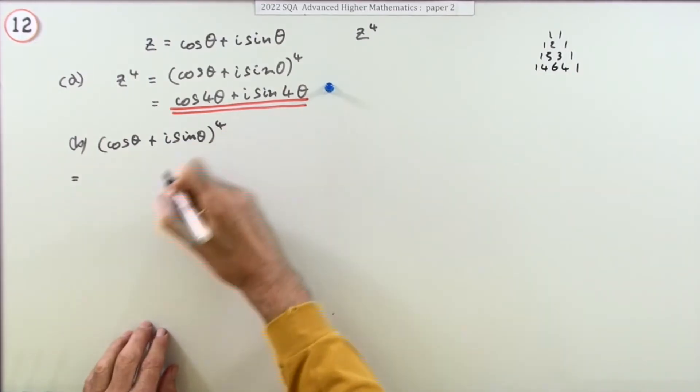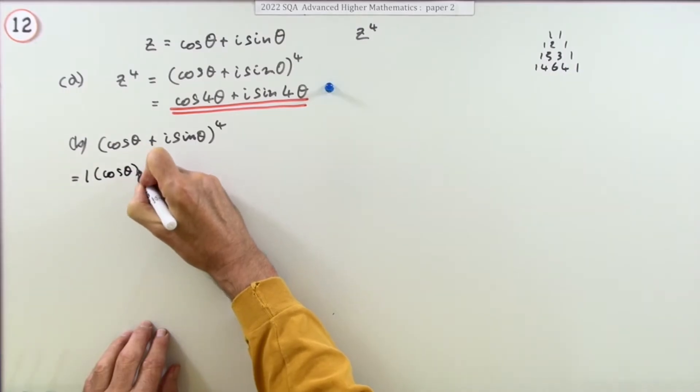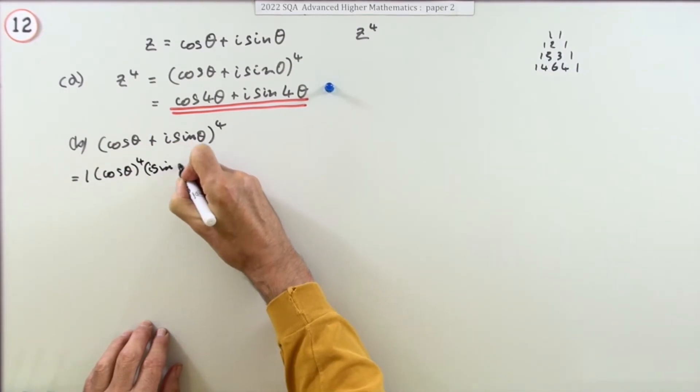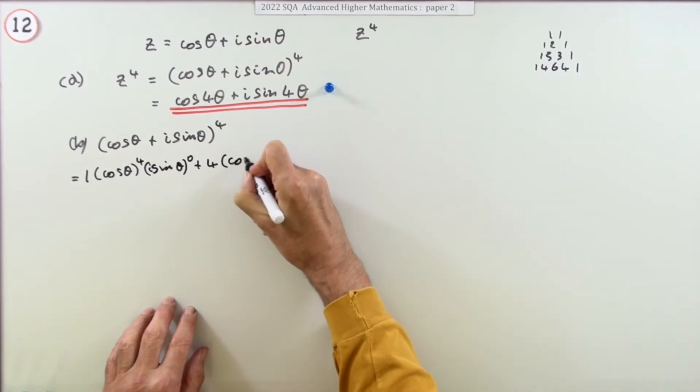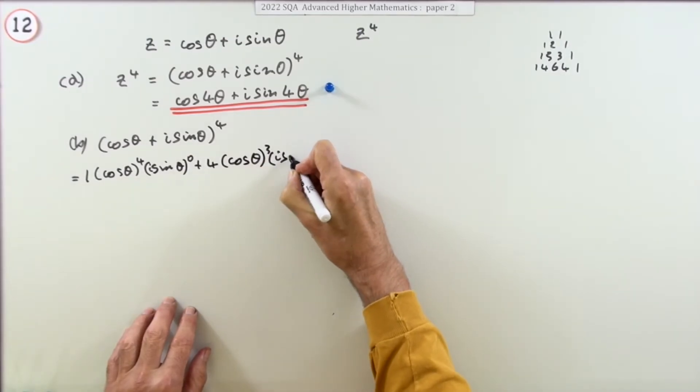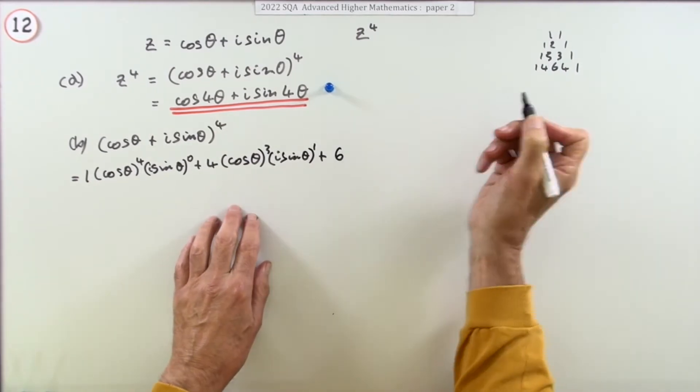So the binomial expansion will be one lot of the cos theta to the power 4, the i sine theta to the power 4, plus 4 times cos theta to the power 3, i sine theta now climbs up to power 1, and so on.